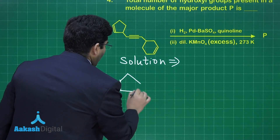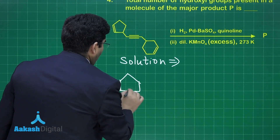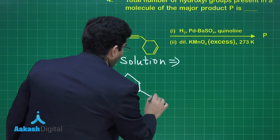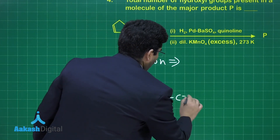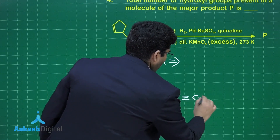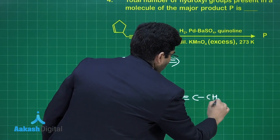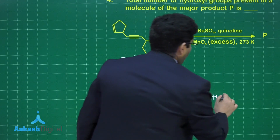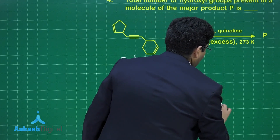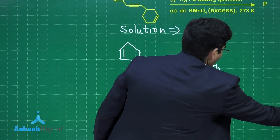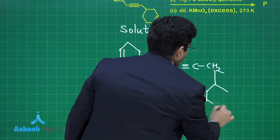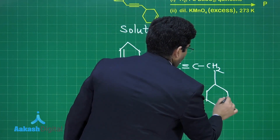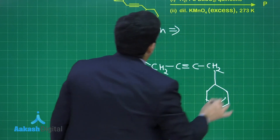We have a 5-membered ring, and with that 5-membered ring CH₂-C≡C-CH₂, and then a 6-membered ring is attached. The structure will be like this.